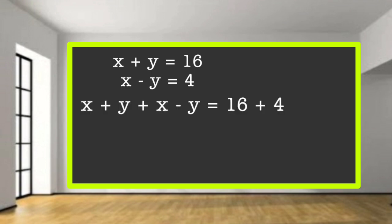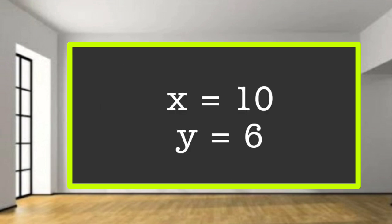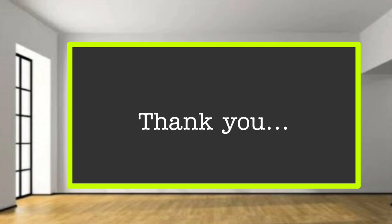Adding the equations: 2x equals 16 plus 4 equals 20, so x equals 10. Then from x plus y equals 16, y equals 6. So x equals 10 and y equals 6. These are the answers to both questions. Thank you.